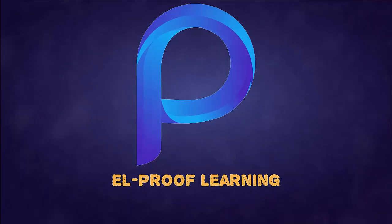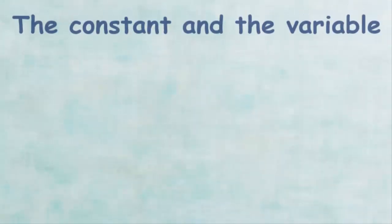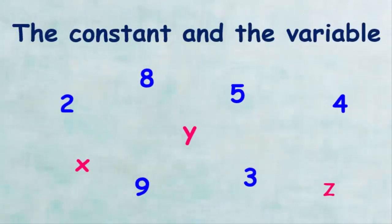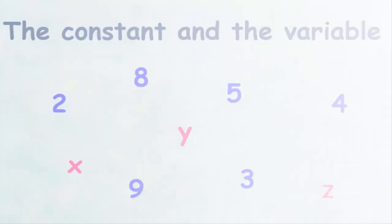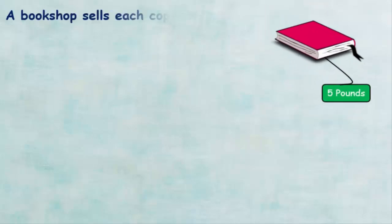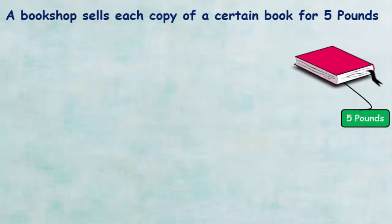Hello and welcome to the Proof Learning Channel. In this video we will explain the meaning of constant and variable and how to create a mathematical relation. In the beginning, if we know that a bookshop sells each copy of a certain book for five pounds, can you find the price of two books, three books, or four books?